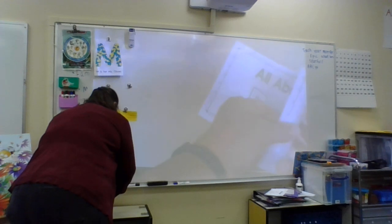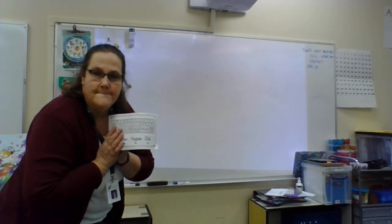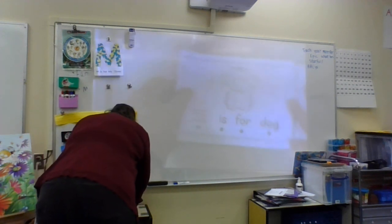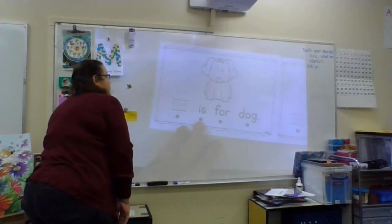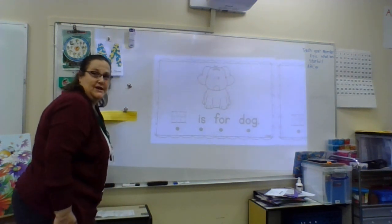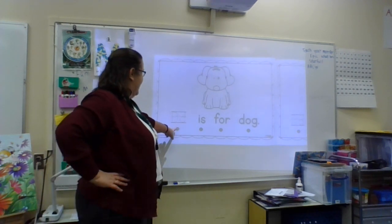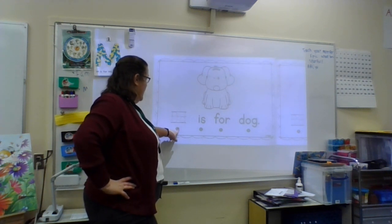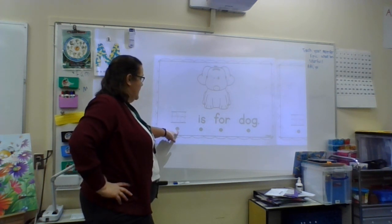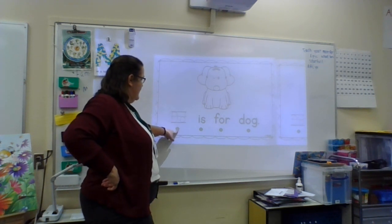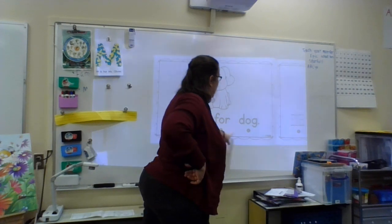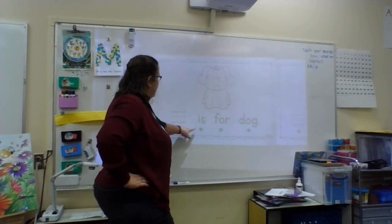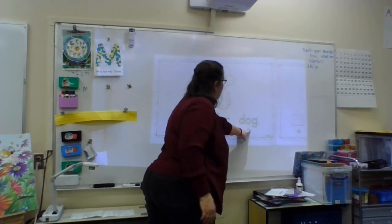So, what do you think is going to be on this first page? It's one of them that we talked about. D is for — use a picture clue. Yeah, dog. So let's read it. Touch and read. Your job is to trace the Ds the best that you can. But let's touch and read right now. D is for dog. And a punctuation mark at the end. Let's read it one more time. D is for dog.